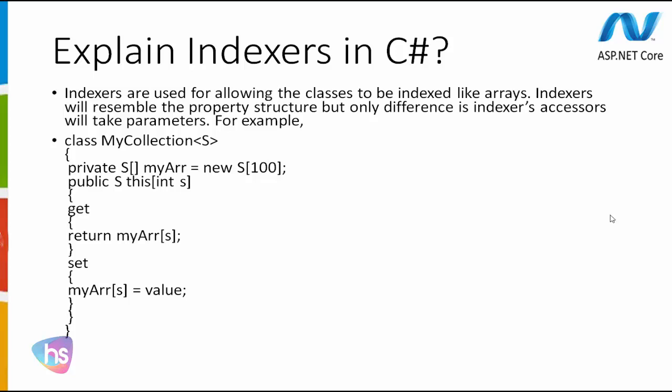I am implementing here a class with my collection, with the braces of start and end. There is a private array indicating object creation: my array equal to new, taking 100. The public accessor uses 'this' with an int index — get returns my array at that index, and set assigns my array the value. These are the indexers written in C-Sharp.